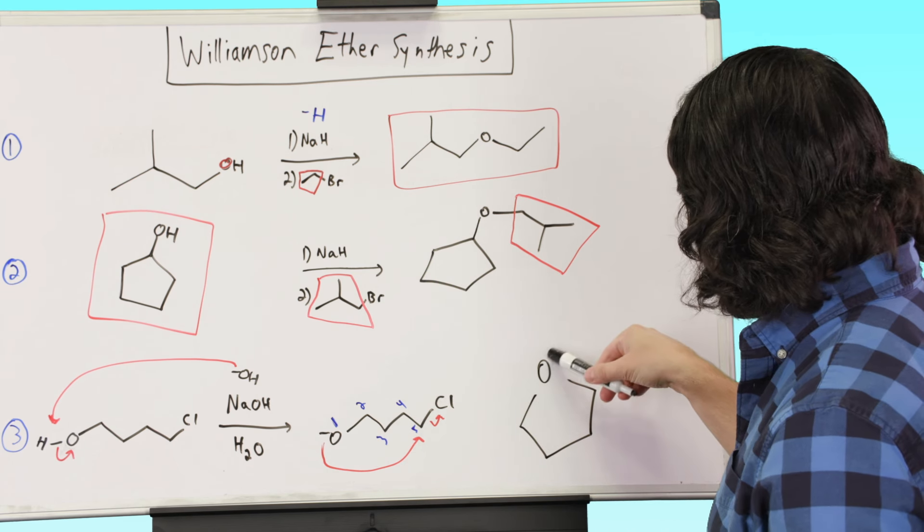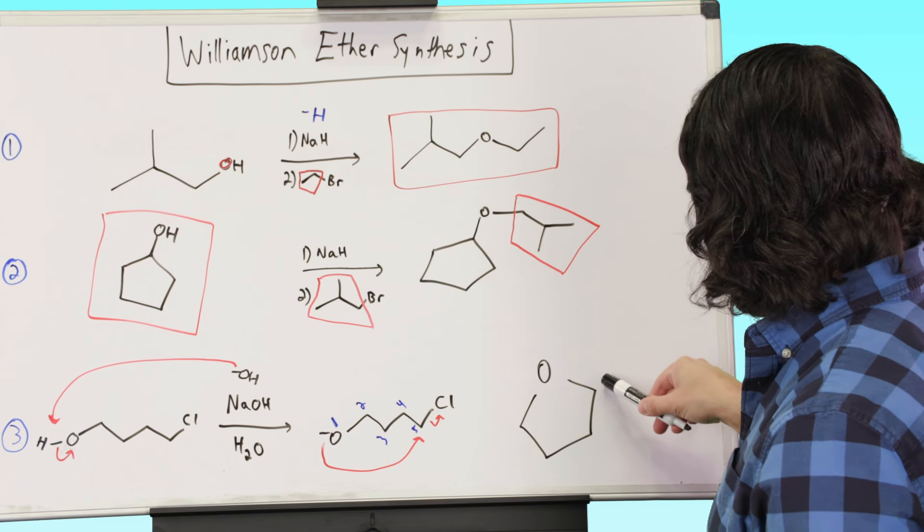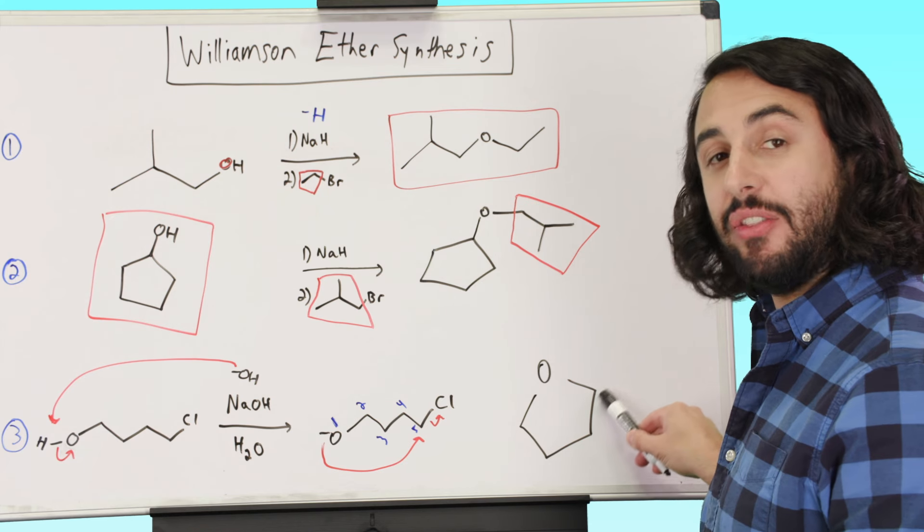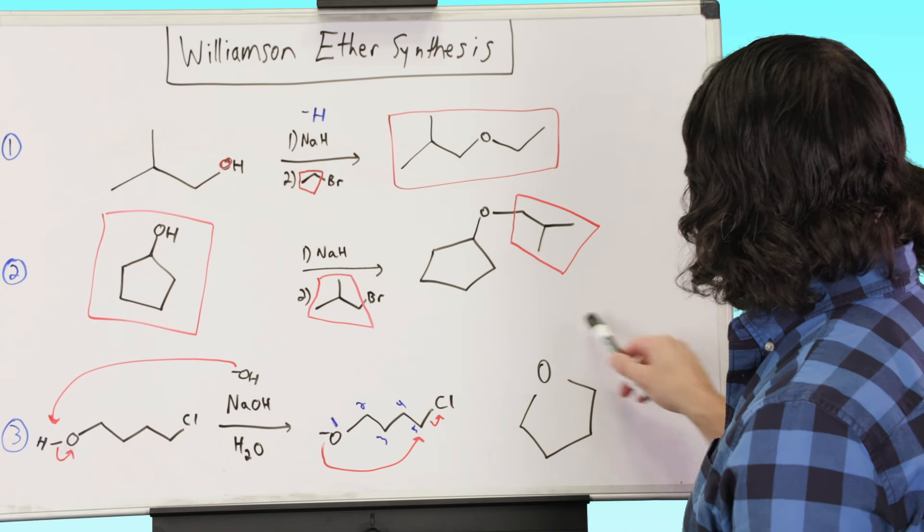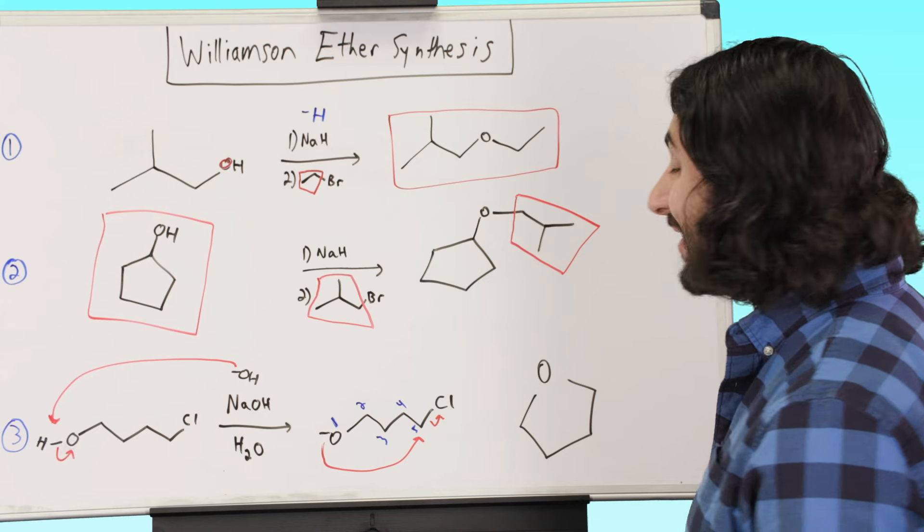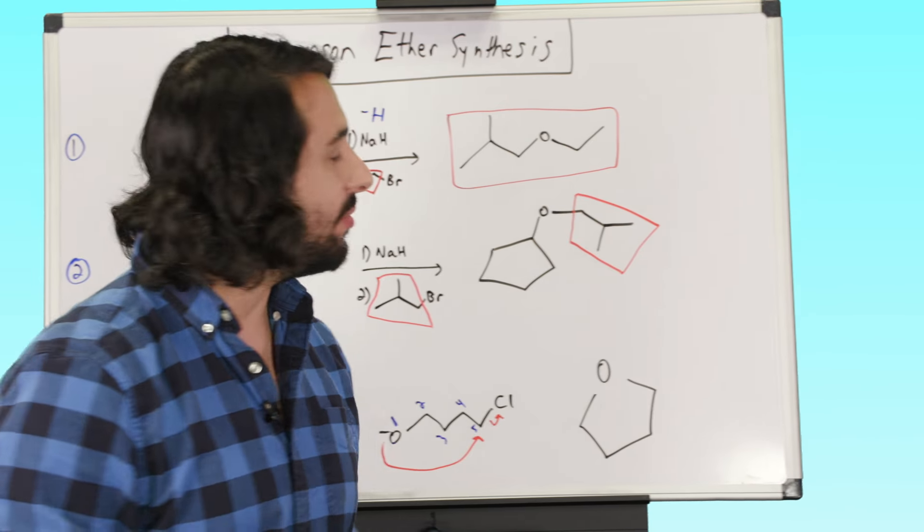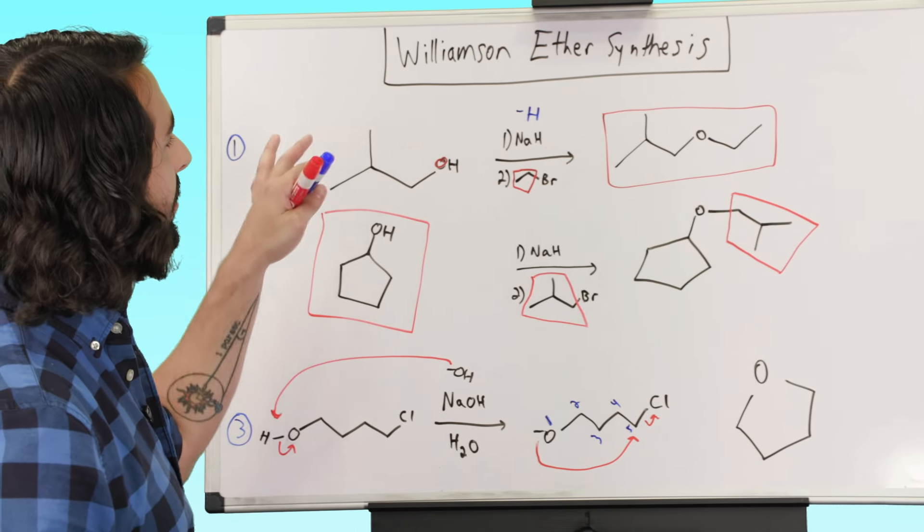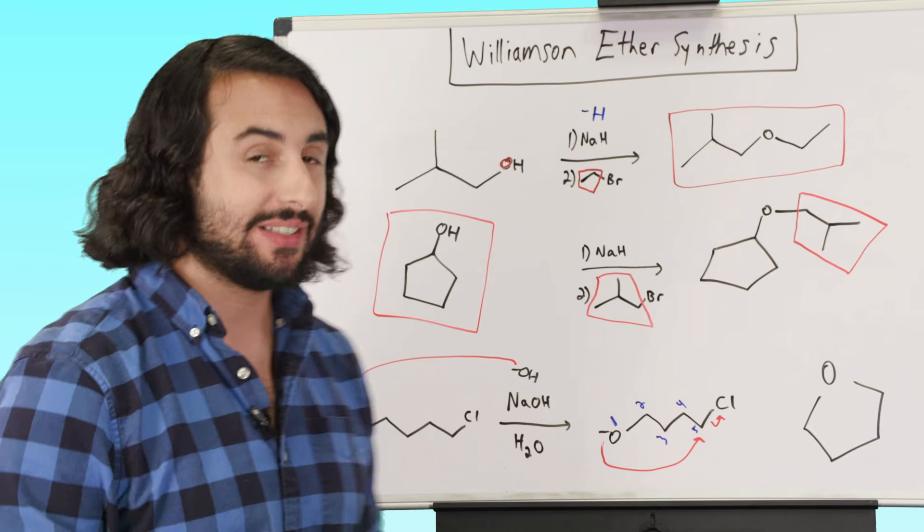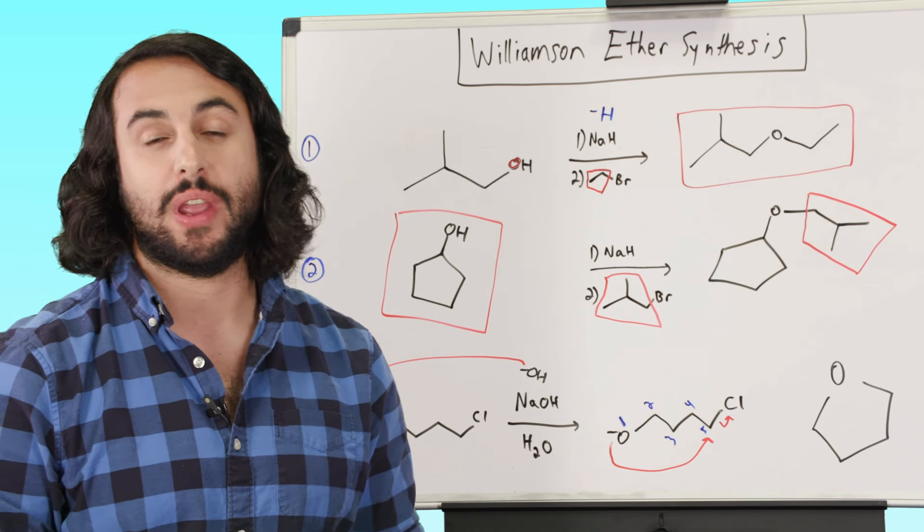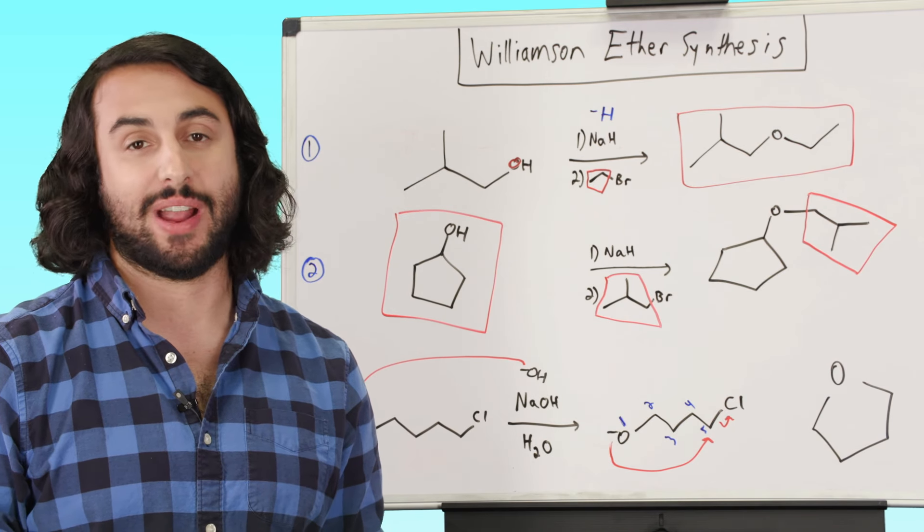So that will be this. That is our one, two, three, four, five. This was the carbon that had the chlorine on there, but that got kicked off. So this is a way that we made a cyclic ether. So these are some different examples, now that we understand Williamson ether synthesis, some examples of what we can do in both the forward and reverse direction.